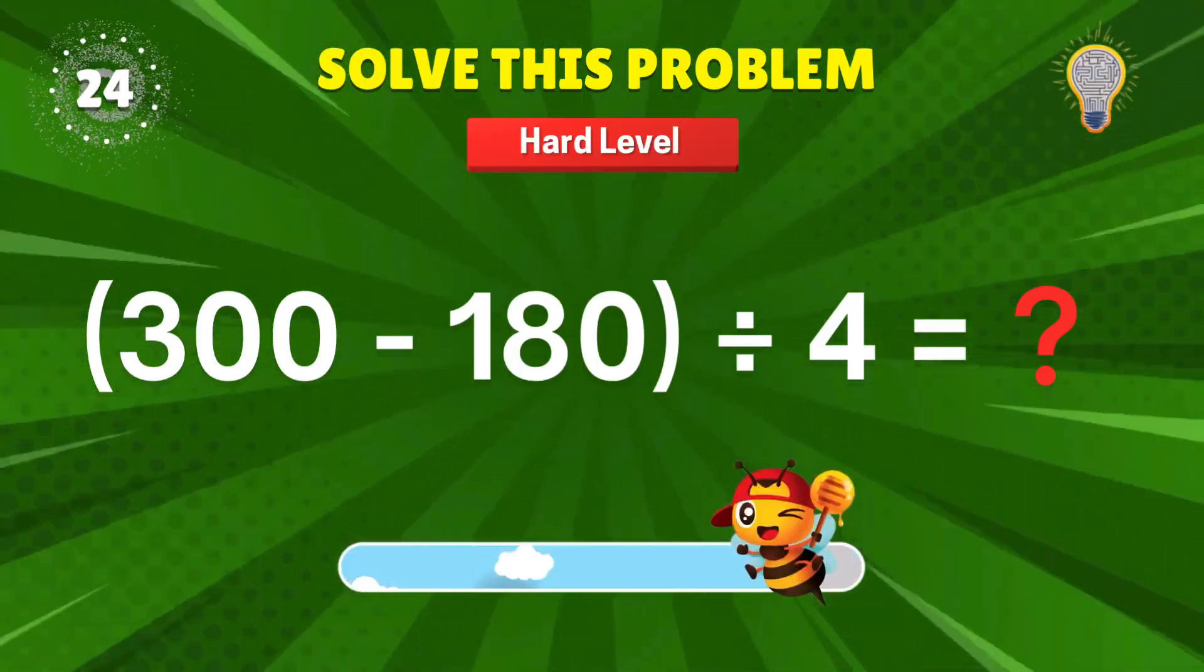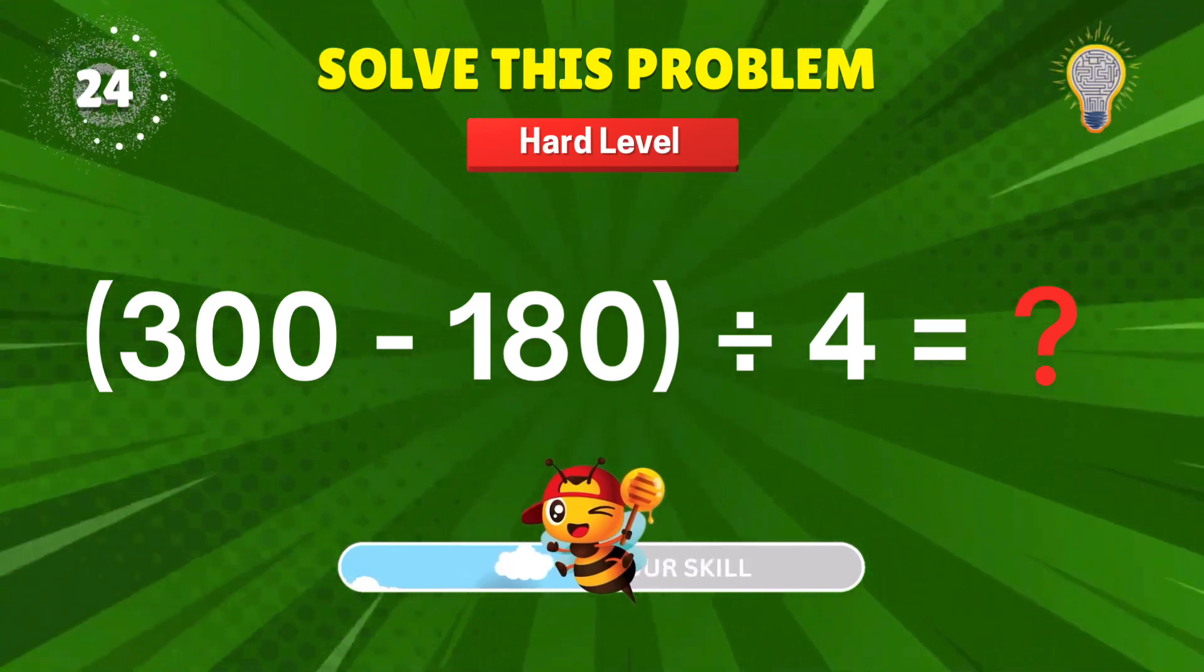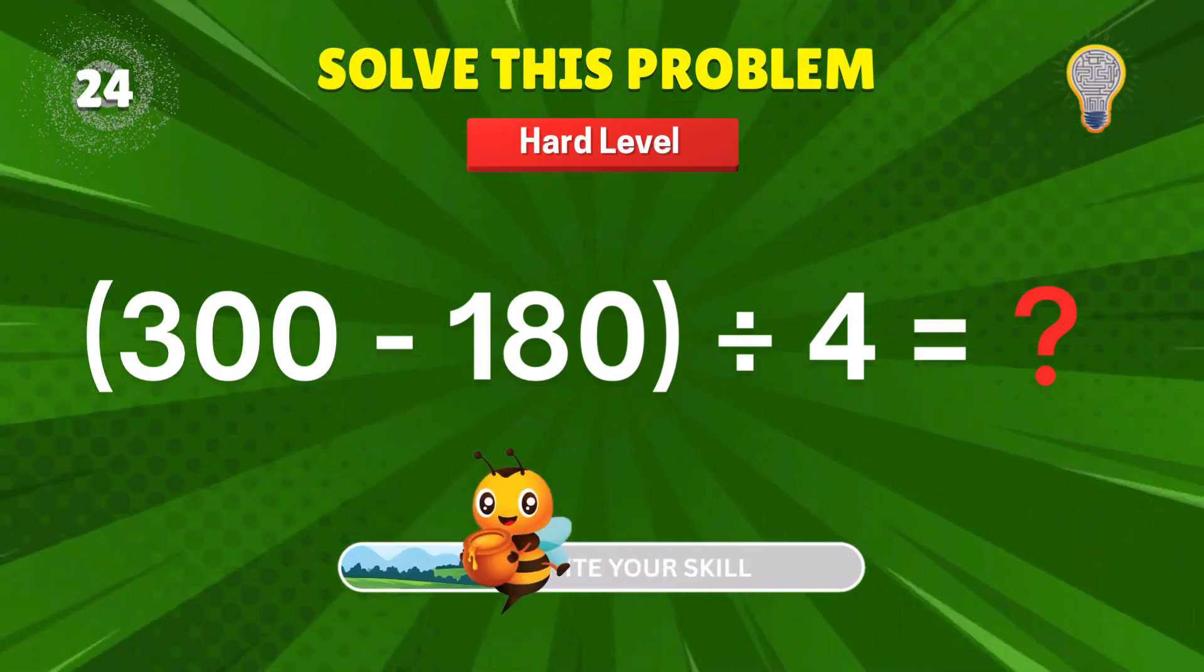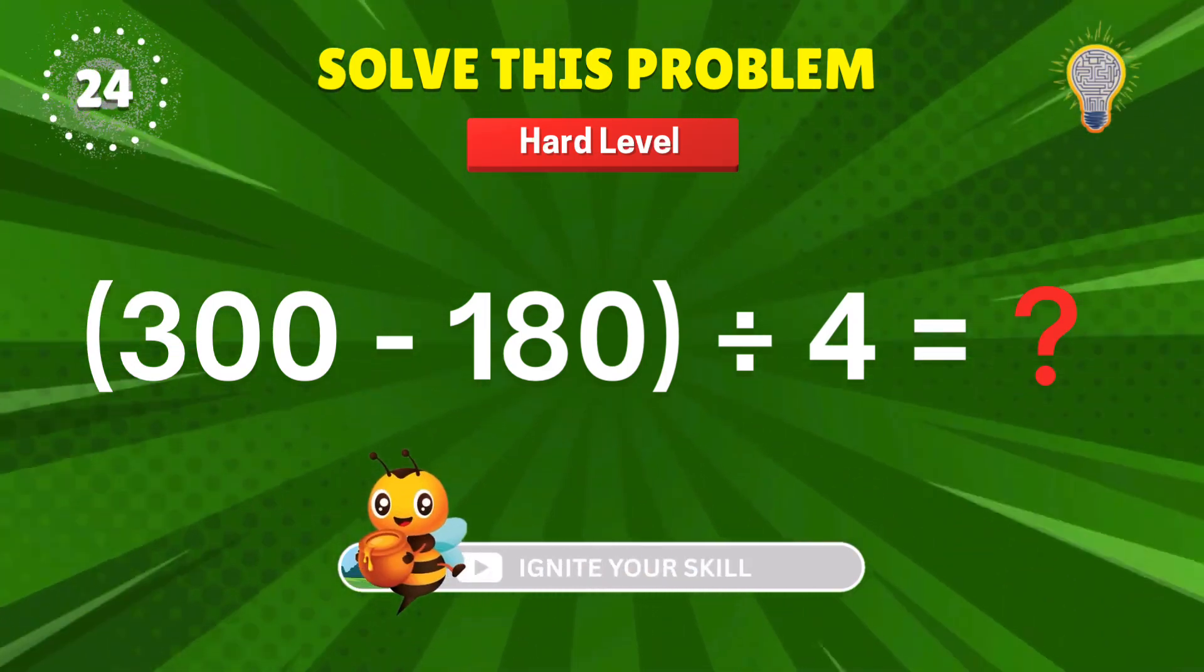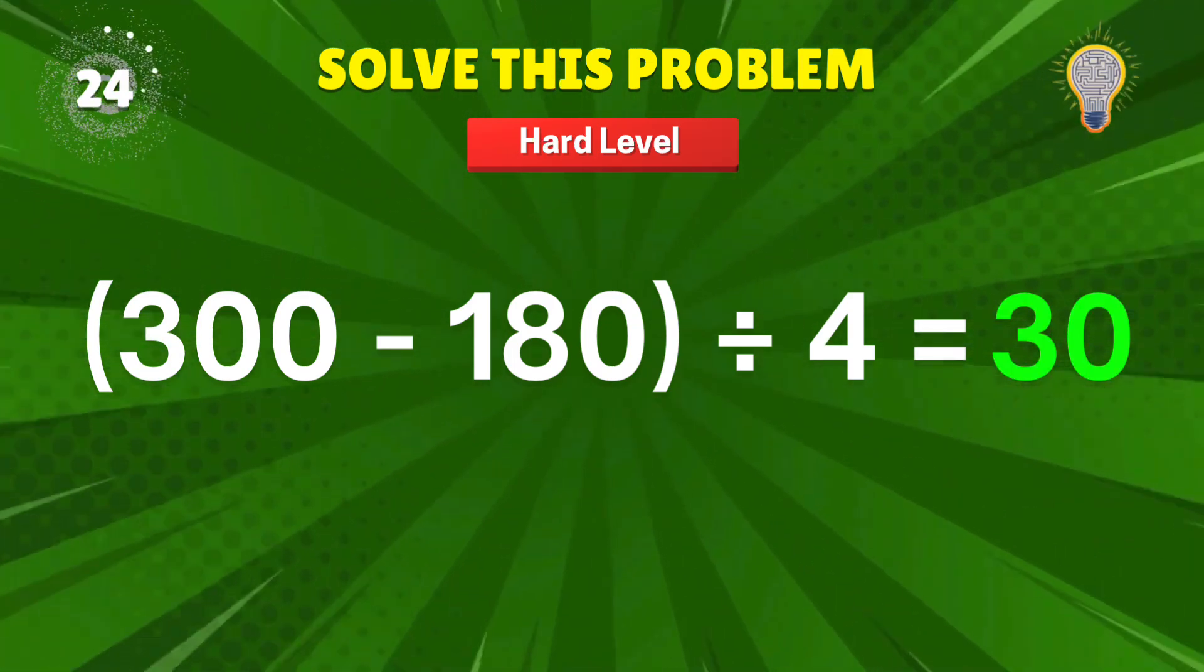300 minus 180? Divided by 4? Take it slow, you got this. 30. Math mode on. Plus 1 point.